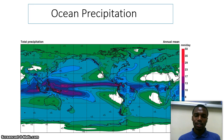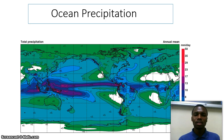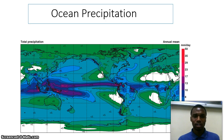This image shows precipitation over the ocean. It is expected to have large precipitation over the equator due to convection, as compared to other areas of the subtropics. This image is showing that over the equator it tends to have more rainfall compared to other areas.